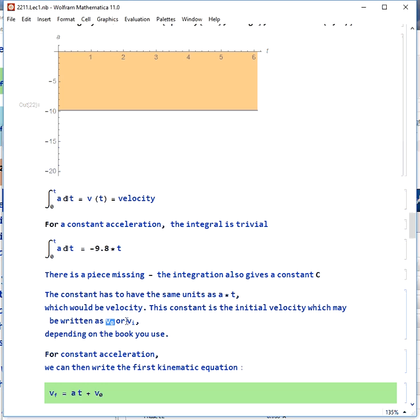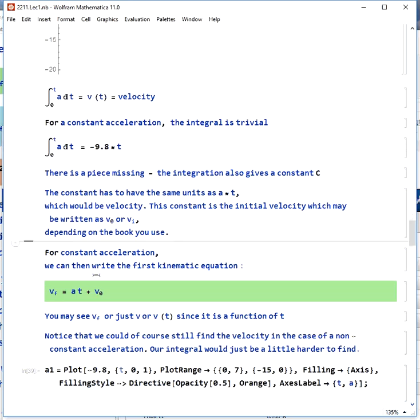You might see this written as v0 or v initial, depending on the source you're looking at. Therefore, for constant acceleration, we get our first kinematic equation, v final equals v0 plus at.